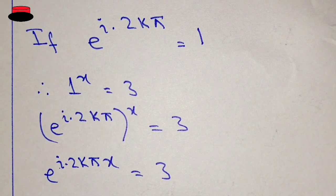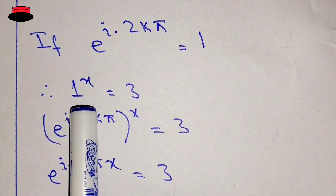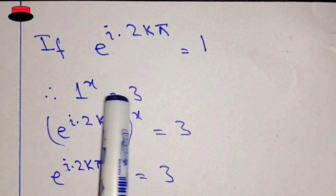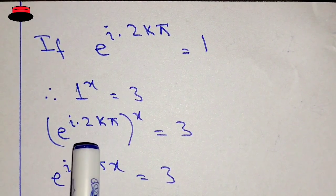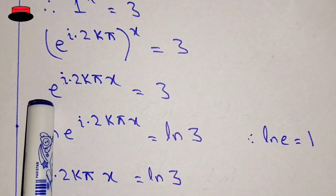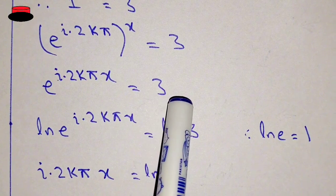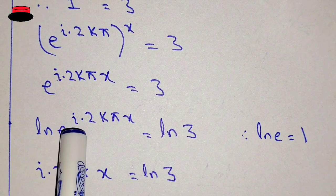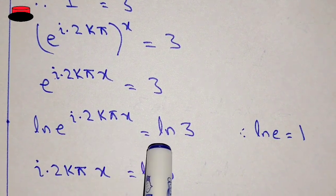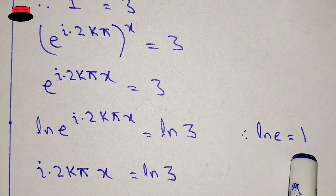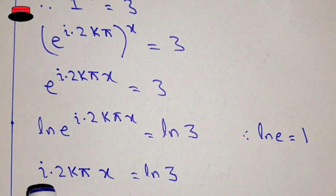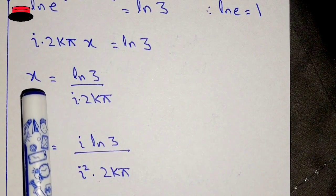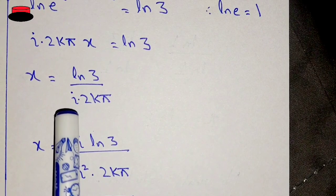Since in the question we know that 1^x equals 3, we substitute e^(i·2kπ) in place of 1. So it becomes (e^(i·2kπ))^x equal to 3, which gives e^(i·2kπ·x) equal to 3. Now multiplying by ln on both sides: ln(e^(i·2kπ·x)) equal to ln(3). Since ln(e) equals 1, it simplifies to i·2kπ·x equal to ln(3).